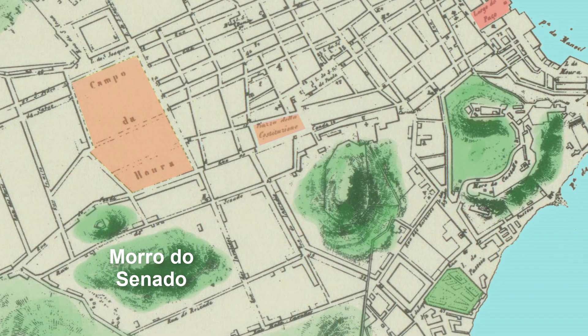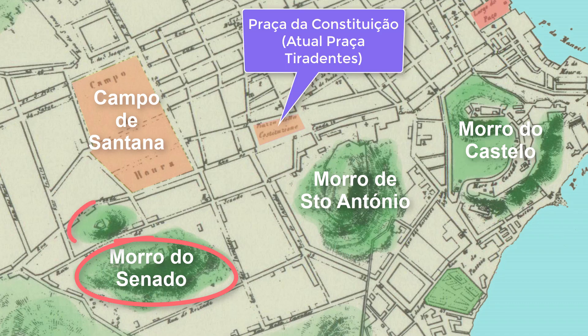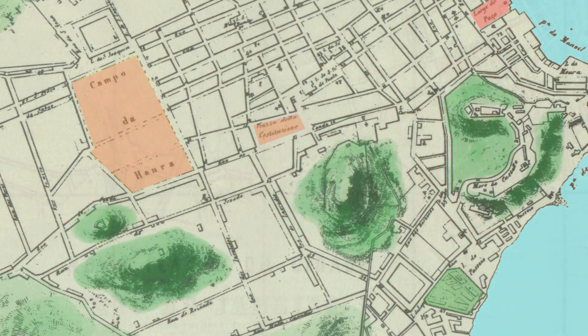This map that we are seeing now is an Italian map of 1840. We see that the Campo of Santana appears with the name of Campo da Honra. We also see the Morro do Senado, the Morro of Santo Antônio, and the Morro of the Castelo.